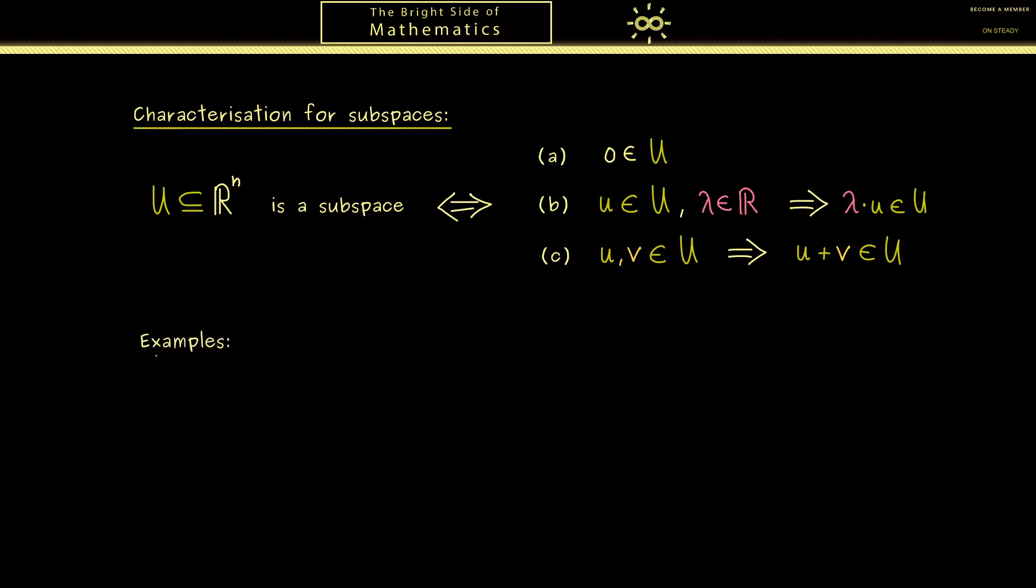And let's start with so-called trivial subspaces. Here I can tell you mathematicians say trivial if things are immediately given and we don't have to think about them very long. So trivial does not mean that the things are easy or unimportant. It just means that they are already there. For example we have the zero space. The space that only consists of the zero vector.